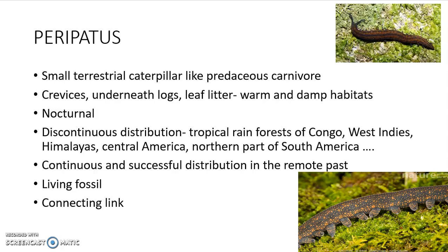Another interesting feature is the discontinuous distribution of this animal. They are usually seen in tropical rainforests of Congo, Western Africa, Central America, and parts of South America. This discontinuous distribution shows that in the remote past, when there was a land connection between various continents, these animals enjoyed a continuous and successful distribution. Later, due to the destruction of their habitat, their distribution became restricted to certain pockets.